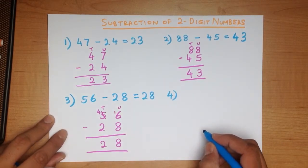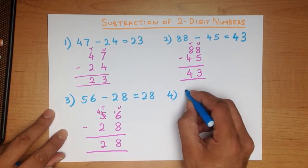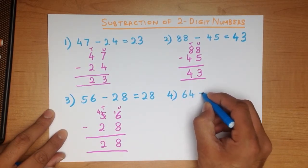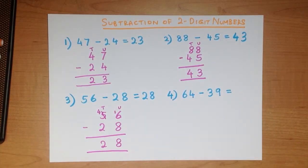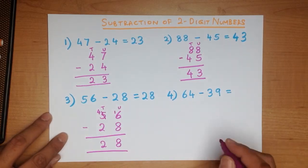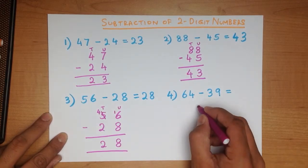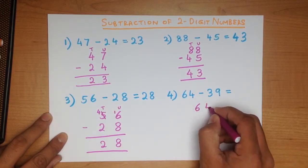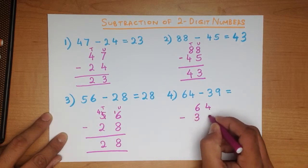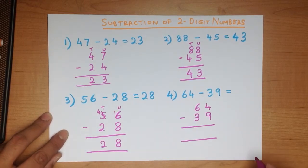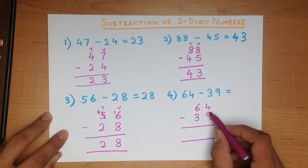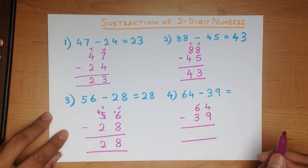Let's look at one more example. What is 64 minus 39? Let's write these numbers down in the vertical format, in columns. 64 minus 39. Let's put a nice big equal sign. We always start with the column on the right-hand side first.